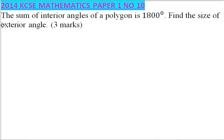2014 paper 1 number 10. The sum of interior angles of a polygon is 1,800 degrees. Find the size of the exterior angle.